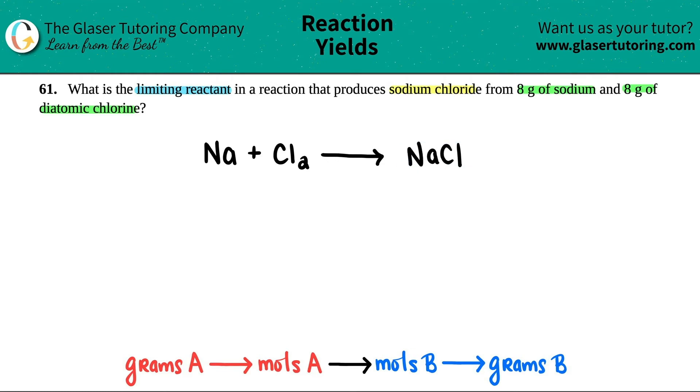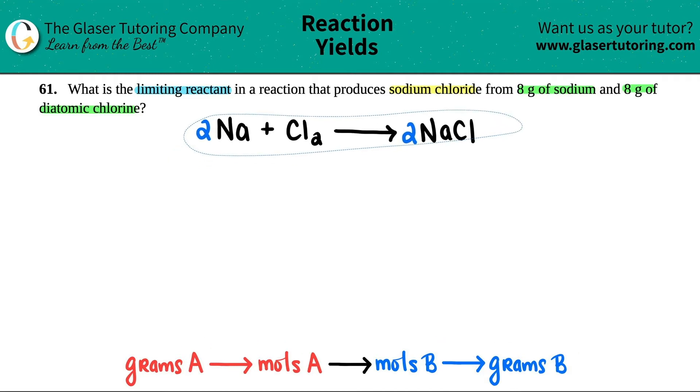Now we just got to balance it. There's two chlorines, so I'm going to put two in front of here. That gives me two sodiums, so I have to put a two here. Now we have a balanced equation.